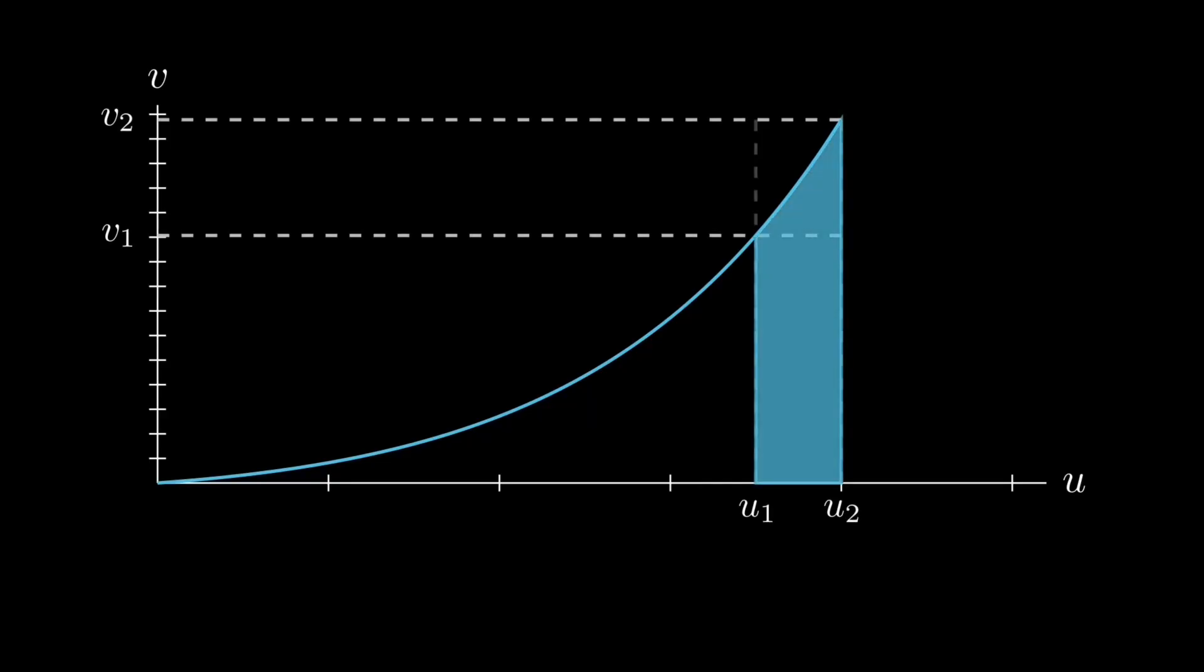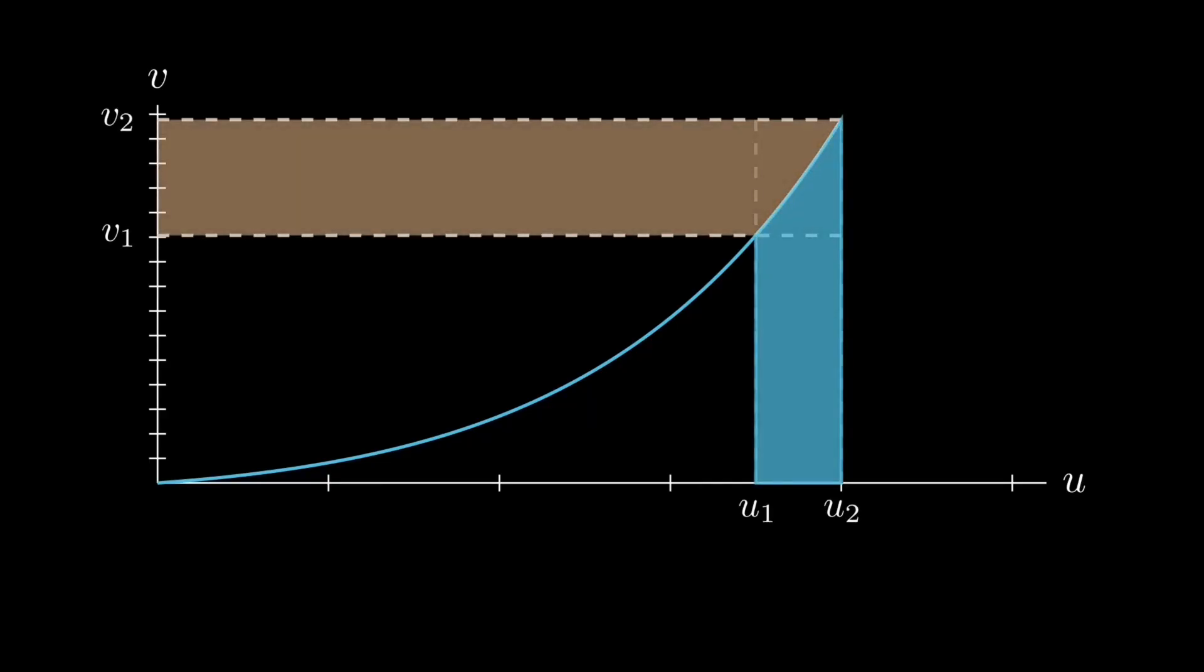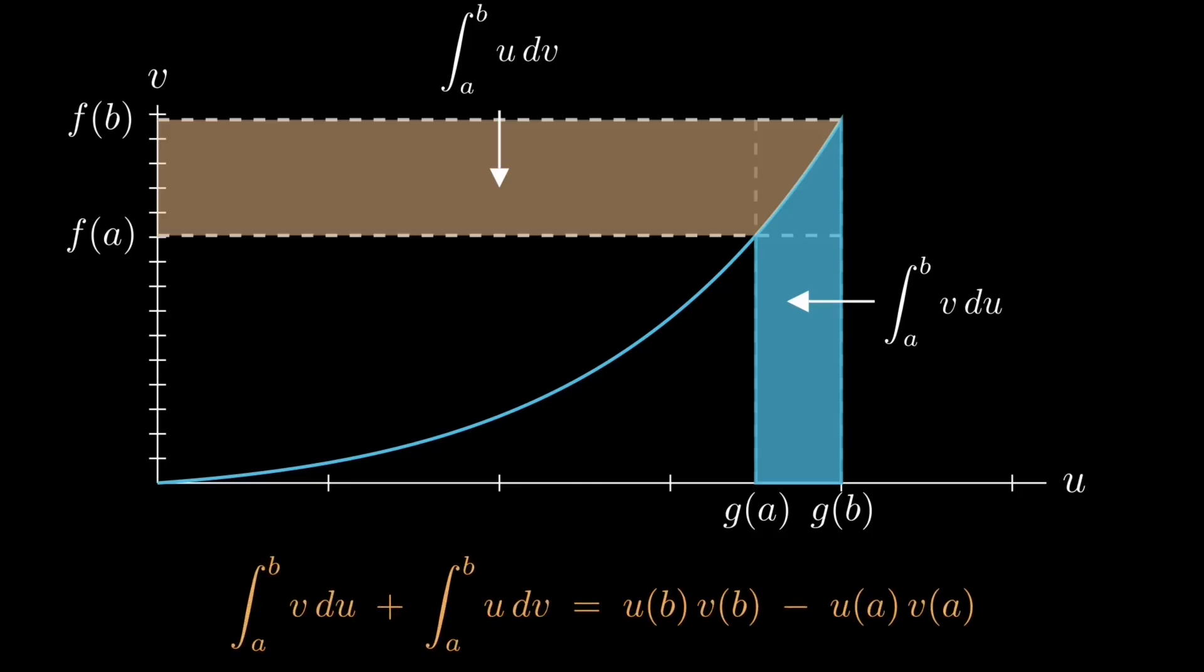There's also a geometric lens. In a plane where u runs along one axis and v along the other, integral of v du is the vertical area under the curve, and integral of u dv is the horizontal strip to its left. Together, they fill up an area which can be seen as the difference between two rectangles: u times v minus u times v.